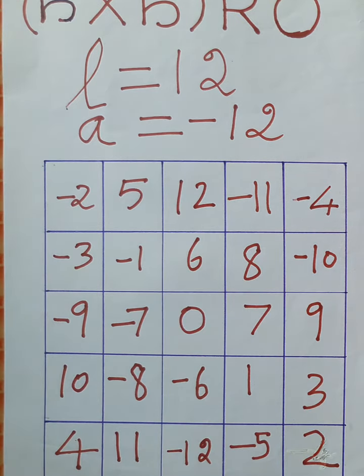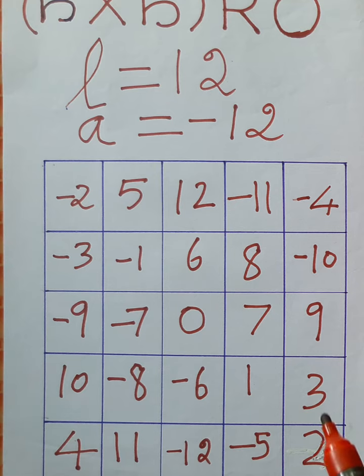Now I wrote all the elements from minus 12 to plus 12 in this table, 5 by 5 magical table. In this table the sum of every direction, that is row wise, column wise, diagonal wise, will be equal to 0.